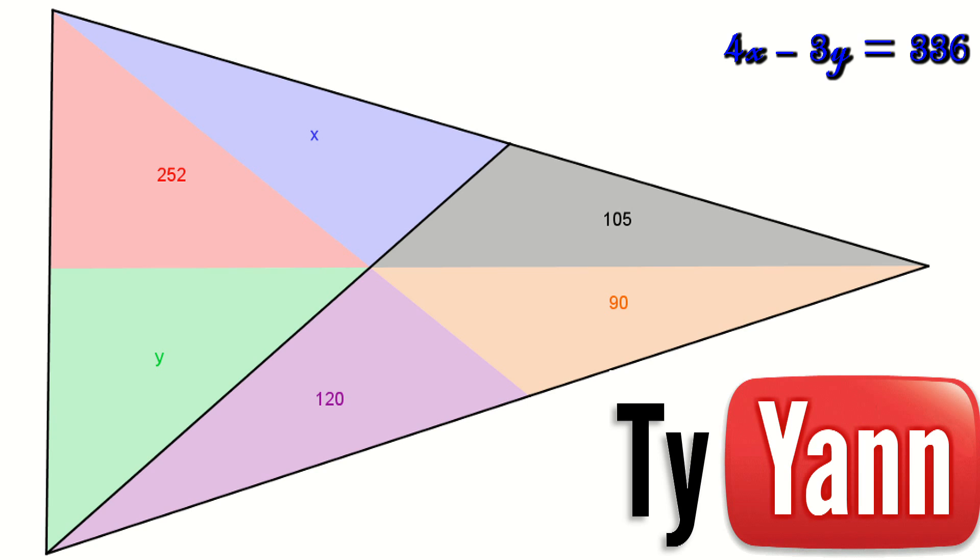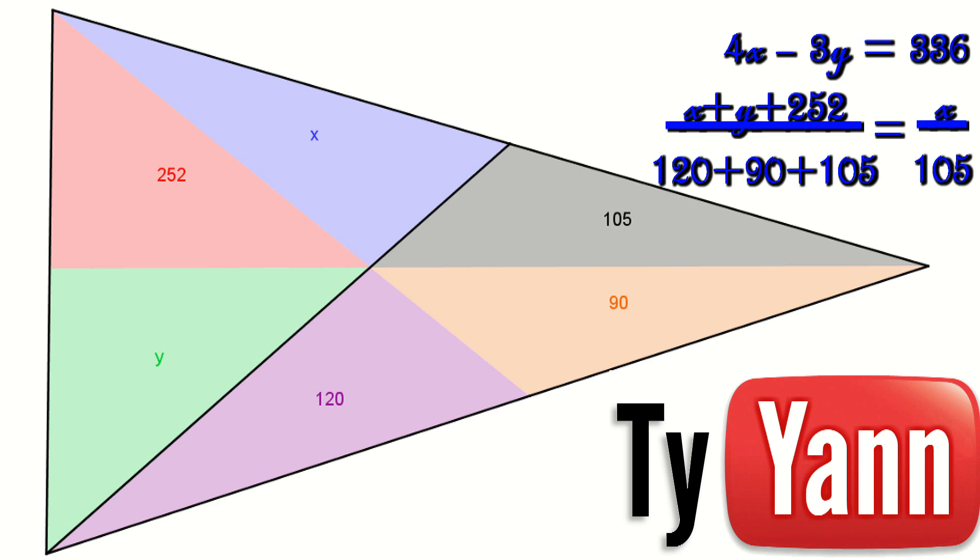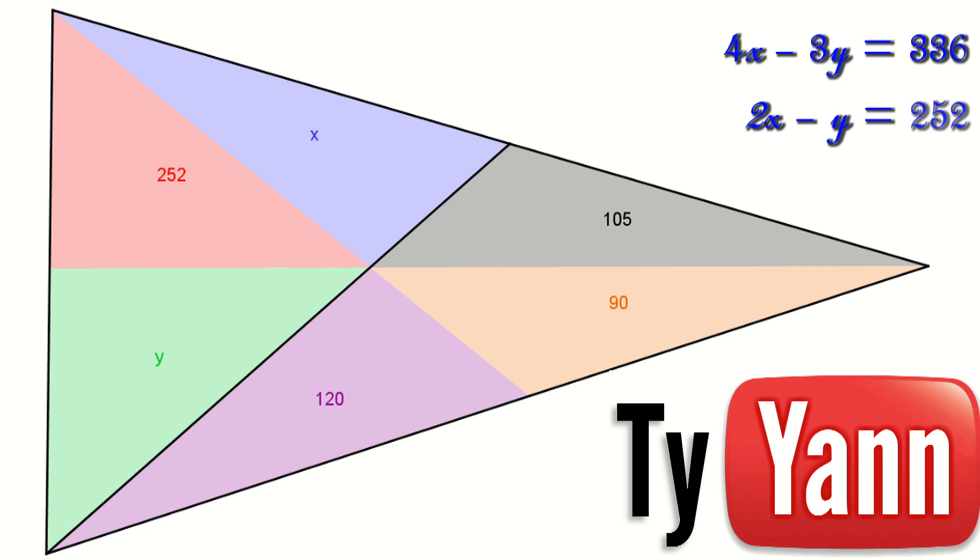And of course, the ratio of those two areas is the same as the ratio of the blue triangle and the grey triangle. So we get another equation the same way, which is x plus y plus 252 divided by 120 plus 90 plus 105 equals x divided by 105. We have now a set of two equations. The second one we're going to make it a little bit simpler, like this.